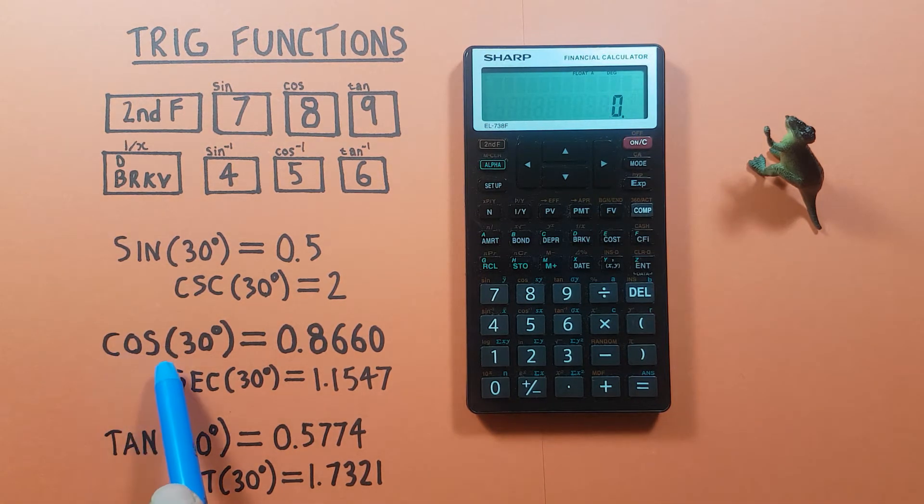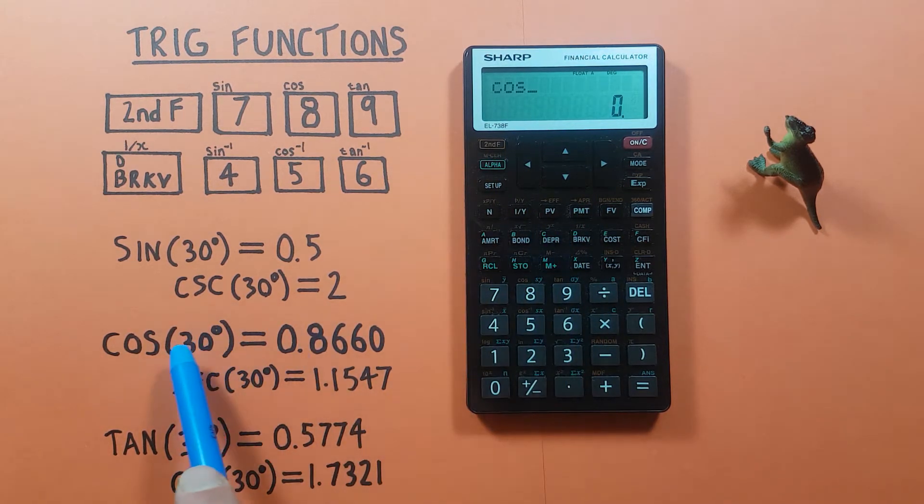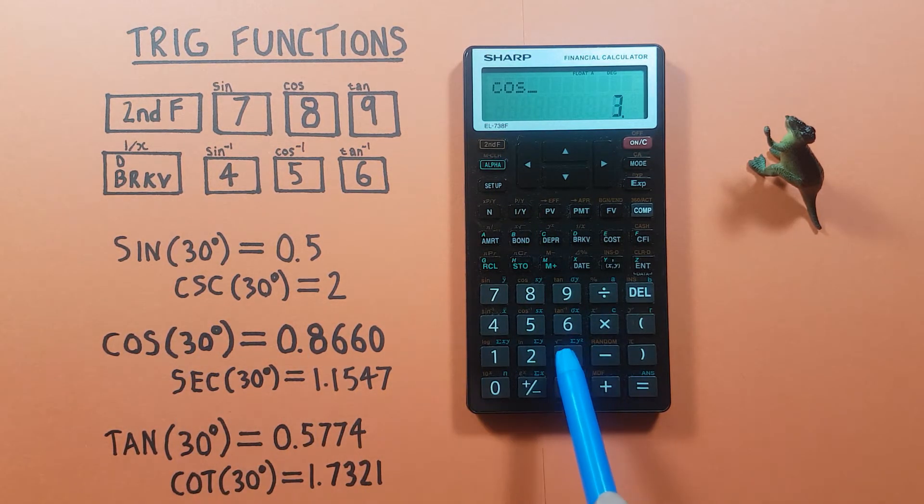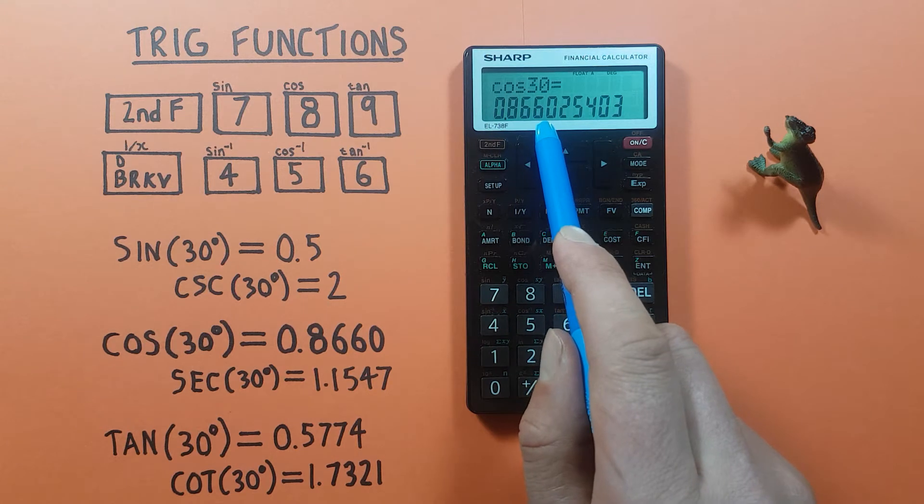For cosine we use the 8 key, so again we go second, eight. If we want to find cosine of 30, enter the 30 and press equals, and we see this gives us 0.8660, etc.